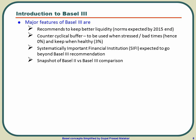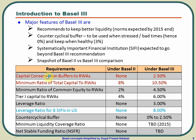Looking at BASEL 2 vs BASEL 3 side by side: BASEL 3 introduced a capital conservation buffer of 2.5%, which was not present in BASEL 2. Due to this, the minimum ratio of total capital to risk-weighted assets increased from 8% in BASEL 2 to 10.5% in BASEL 3. Minimum common equity to risk-weighted assets went from 2% to 4.5%, and Tier 1 capital to risk-weighted assets went from 4% to 6%. The leverage ratio, not present in BASEL 2, became 3% in BASEL 3.